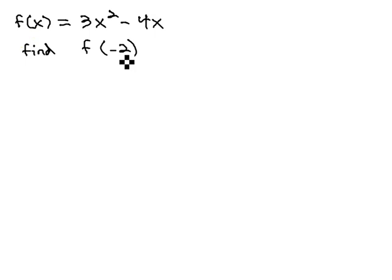We're asked to find f of -2 and notice -2 is replaced to the x. And so, we will do the same thing in the function 3x² minus 4x. We will replace the x's with that -2 value that's going into the function.